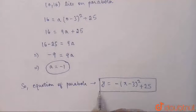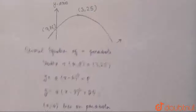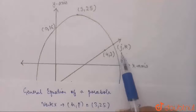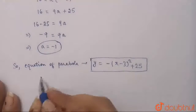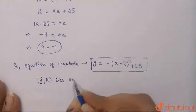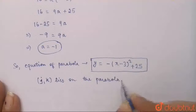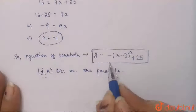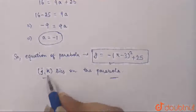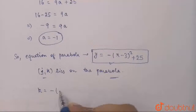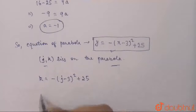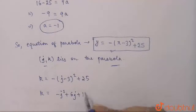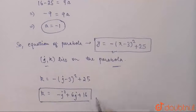This is our equation of the parabola. We also know that the point (j, k) lies on the parabola, so it will also satisfy the equation. Putting x = j and y = k, we get k = -(j - 3)² + 25. On simplification this becomes k = -j² + 6j + 16. This is equation 1.